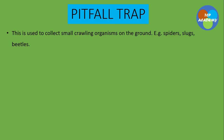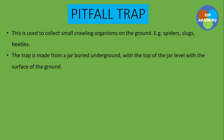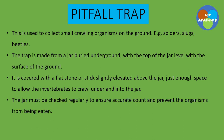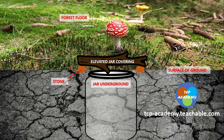We're going to be looking at the pitfall trap. This is used to collect small crawling organisms on the ground, especially things like spiders, slugs, and beetles. The trap is made from a jar buried in the ground with the top of the jar levelled with the surface. A flat stone or stick is elevated above the jar just to provide enough space to allow invertebrates to crawl under and into the jar. The jar must be checked regularly to ensure accurate count and to prevent organisms from being eaten.